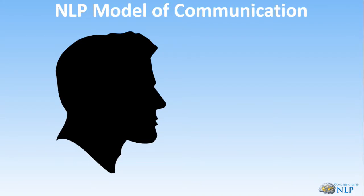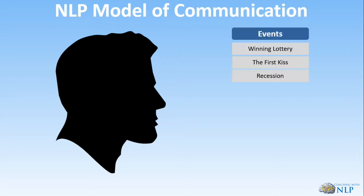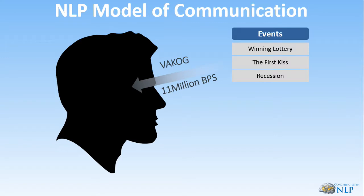Let's turn to page 53 and talk about the NLP communication model in more detail. What this shows us is that there's some external event — winning the lottery, a first kiss, the recession, whatever the event might be — and we get bombarded by this information through our five senses.